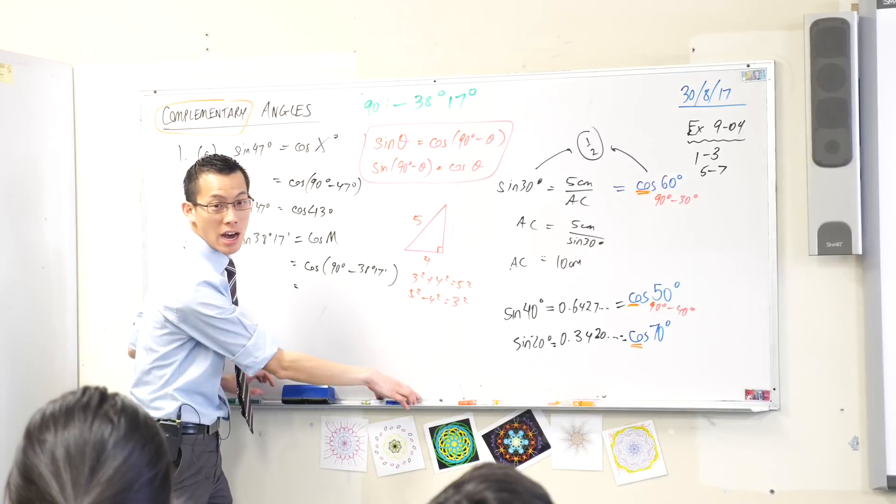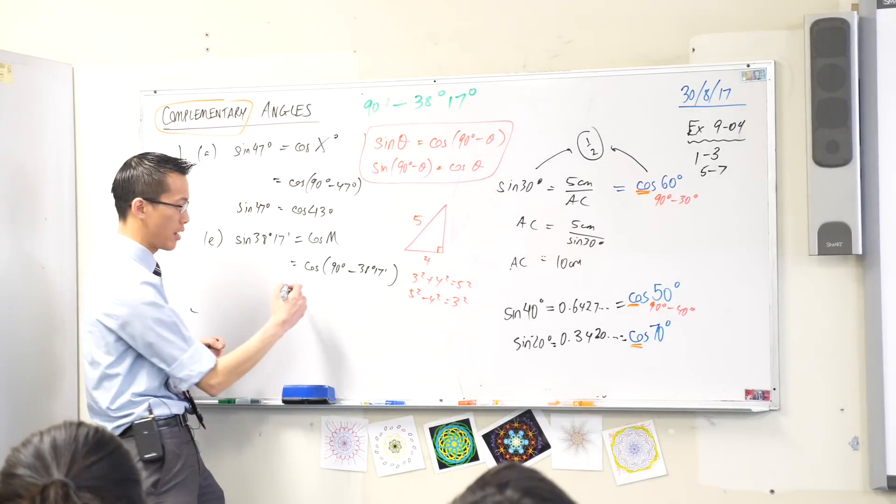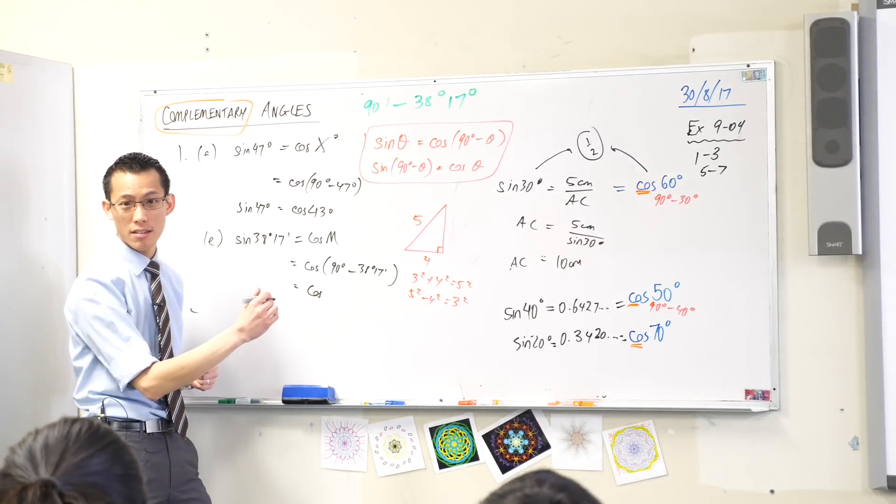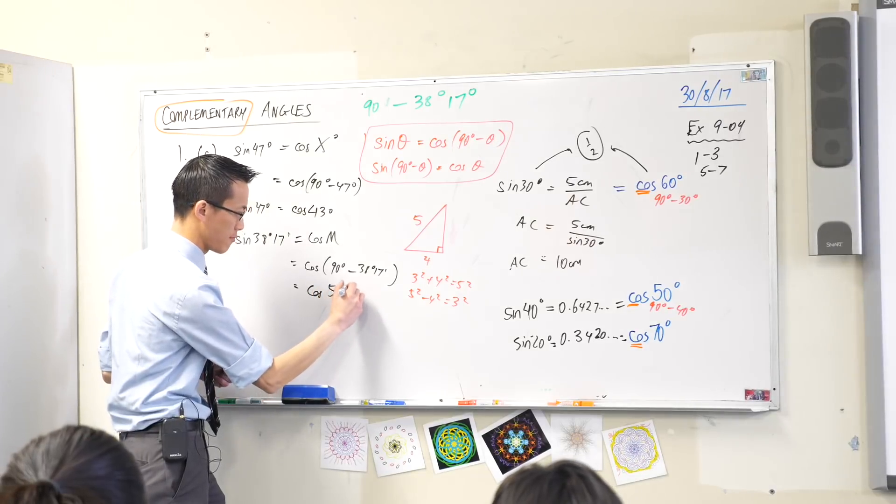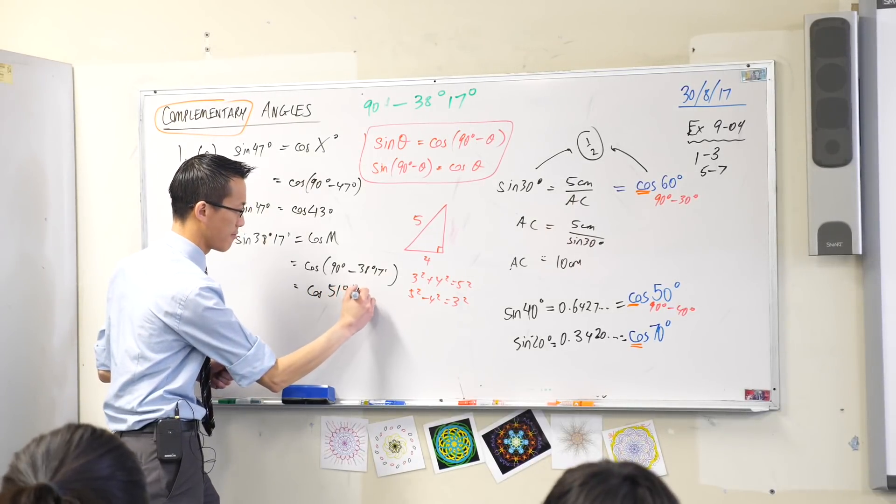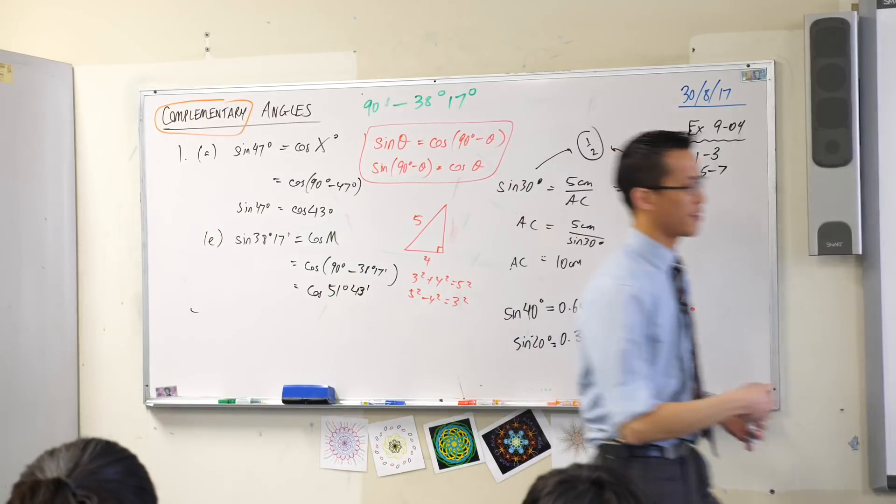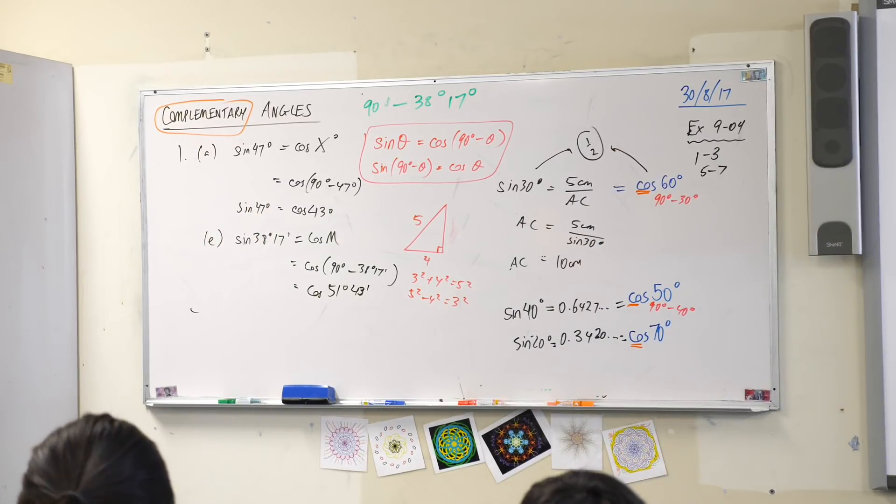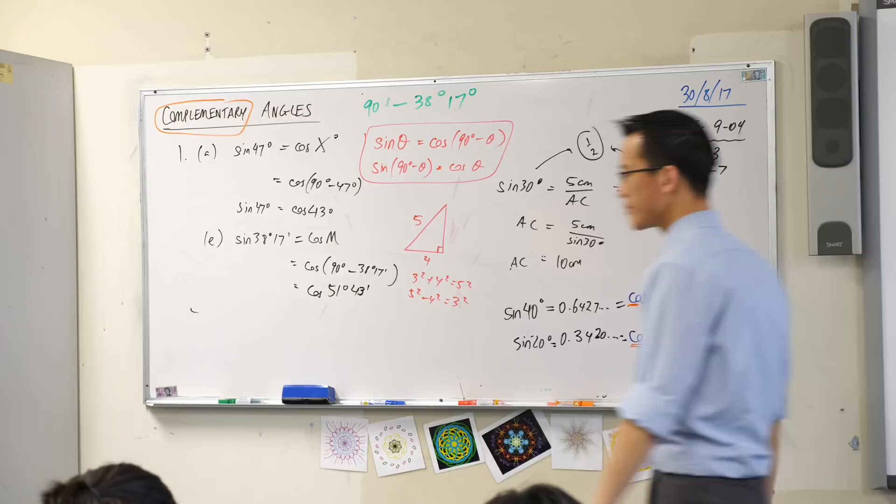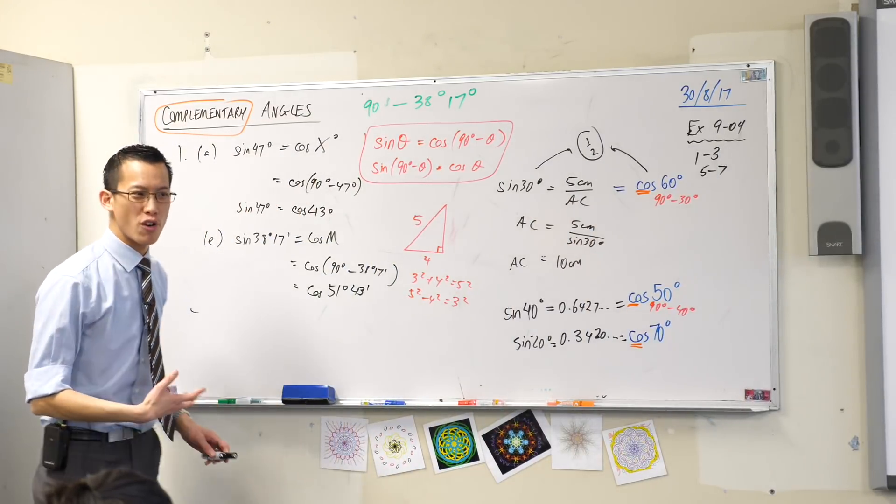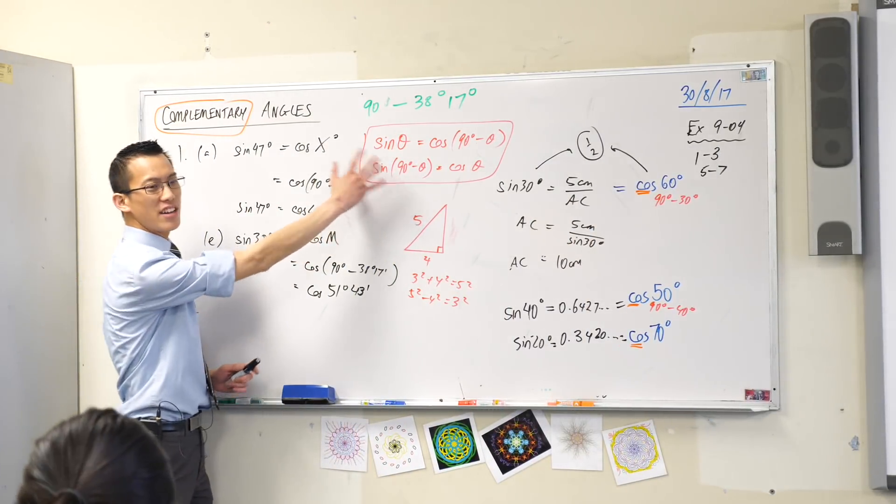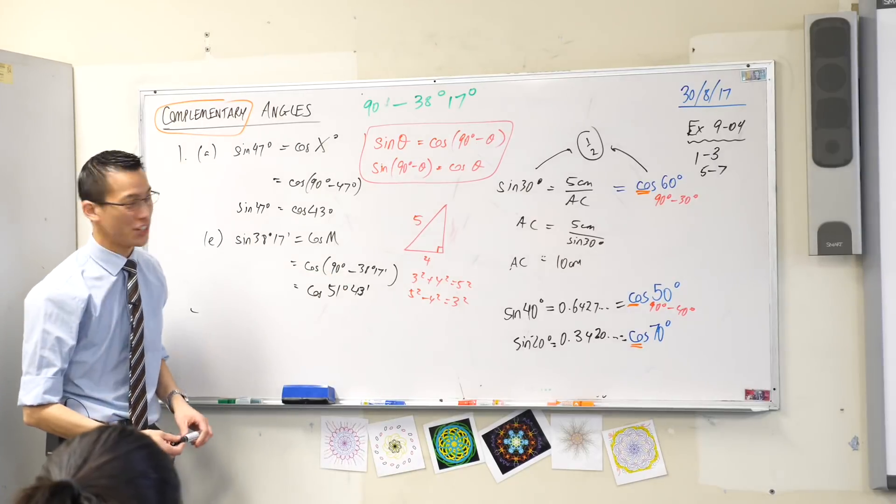I'm pretty sure I heard the answer once or twice. Can someone give me what it is? 50? 51. And 43 minutes. Thank you. You can see in each of these cases, I found out what the pronumeral is by taking advantage of this complementary relationship, okay?